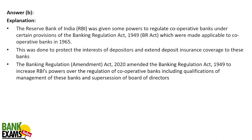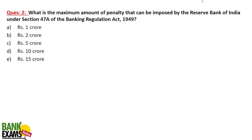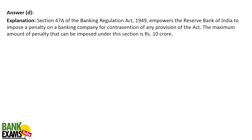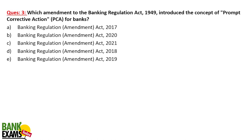Question number 2: What is the maximum amount of penalty that can be imposed by the Reserve Bank of India under Section 47A of the Banking Regulation Act 1949? The maximum penalty RBI can impose on any bank for default or not following any rule or guideline is Rs. 10 crores, according to Section 47A.